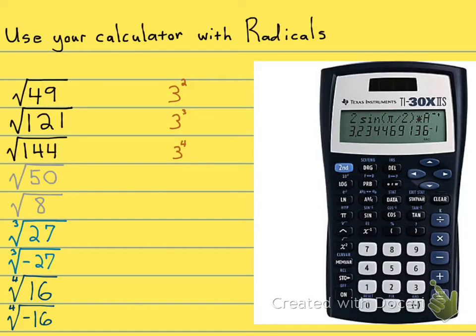Okay, let's take a look at how to use your calculator with radicals. One thing you want to do is familiarize yourself with that chart where we look at these perfect square numbers. 49 is 7 times 7, 121 is 11 times 11.